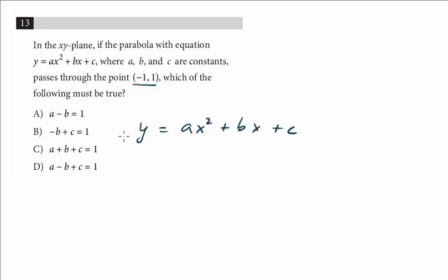So y is 1 and our x is negative 1. We know that a, b, and c are constants. Here we plug in negative 1. We know that negative 1 squared is just 1, so we're left with just an a. Here we're plugging in negative 1. Negative 1 times b will be minus b, and then the c is just c.